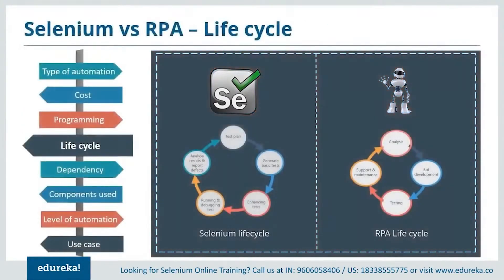What is their life cycle and how do they differ based on this parameter? The life cycle of Selenium is a little complicated compared to that of RPA. Selenium deals with test planning, generating basic test cases, enhancing the cases, running and debugging the tests, and analyzing and reporting defects. Whereas RPA deals with just four processes: analysis, bot development, testing, and support and maintenance.